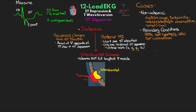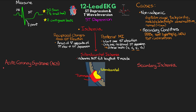With ischemia, we're looking for ST depression in two or more contiguous leads, greater than 0.5 millimeters or half a box. We can have two primary causes of ST depression resulting from ischemia: acute coronary syndrome and secondary ischemia. We actually can't differentiate between these two causes from the EKG alone — we're going to need to evaluate the patient and their presentation. When it comes to acute coronary syndrome or ACS, the ST depression is going to be the result of either a non-occlusive thrombus in the coronary arteries or an occlusive thrombus if the patient has collateral circulation.